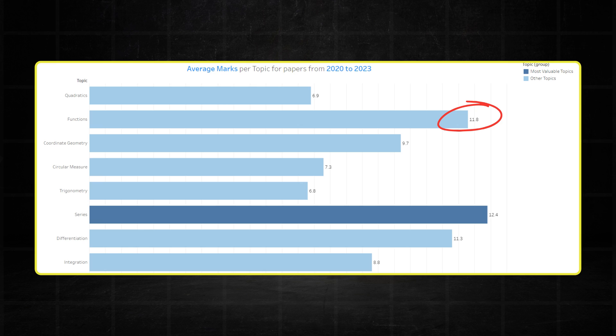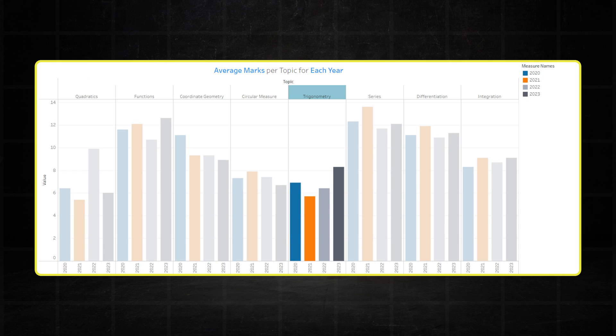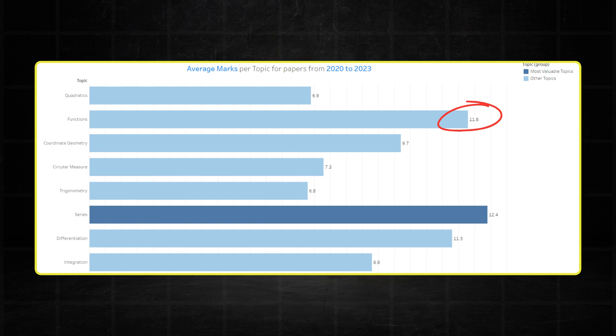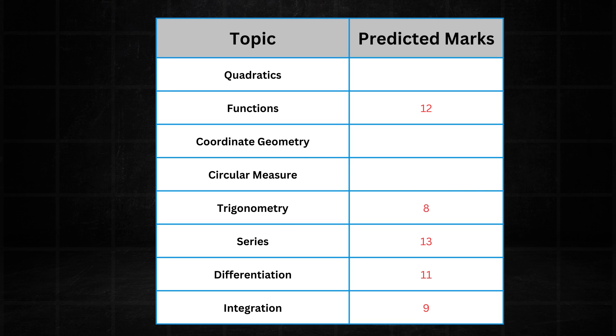Functions with the 9 marks showing massively underperformed its average of 11.8 but I certainly expect it to bounce back up in the May, June series. I do feel though that its underperformance is due to Trig's rise. The transformation question in February, March was a Trig one and typically that would fall under functions. So assuming normal service in May, June series, functions should be firing on all cylinders and averaging around 12 marks per paper.